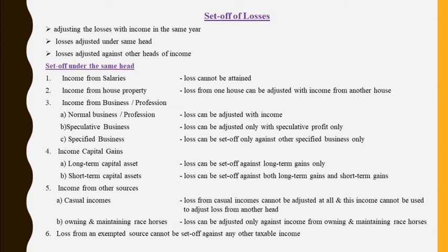The next is income from other sources. Under other sources, I have divided it into two: casual income and owning and maintaining racehorses. Casual income includes income from lotteries, card games, puzzles, betting, etc. If you have a loss from a casual income, then that loss cannot be adjusted with any heads of income. For owning and maintaining racehorses, if you have a loss under this activity, that loss can be adjusted from income from owning and maintaining racehorses only.